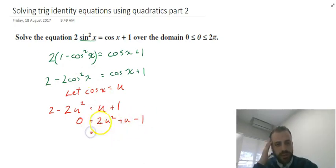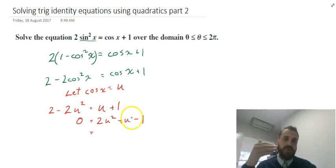Now at this point, you should be able to look at 2u² + u - 1 and use the decomposition method or the cross method or maybe even the quadratic formula to solve for u. But I'm going to factorize this.